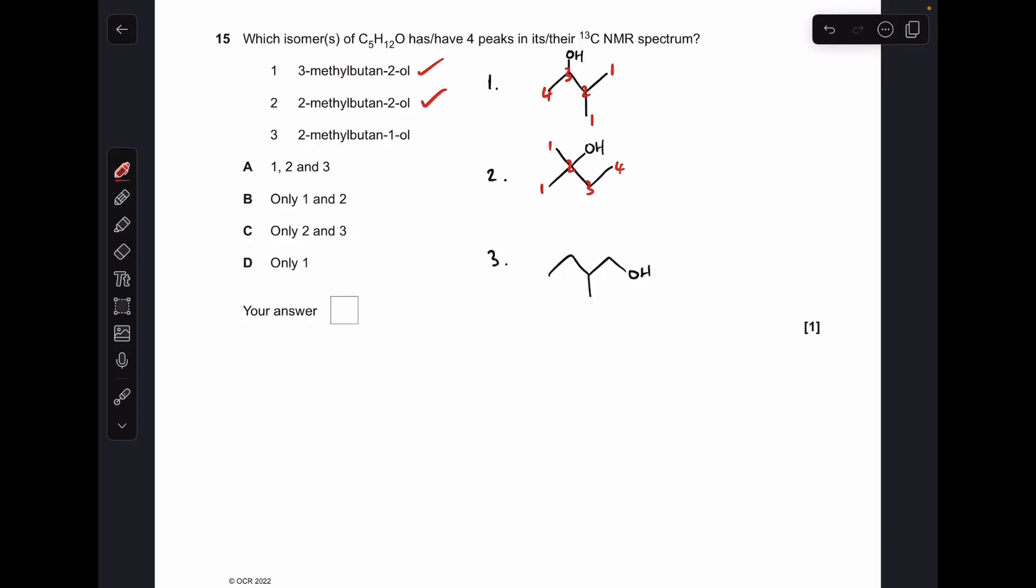And number three, we don't have any equivalent carbons, so they're all different. One, two, three, four, five. So five in that one, that's not right. So one and two only, B.